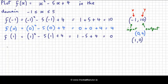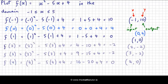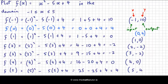Moving on, we want to put in 2 and 3 and 4. And finally, f of 5 is 5 squared minus 5 times 5 plus 4, which is 25. Take away 25 plus 4, which is 4. So when 5 is input, the output is 4.